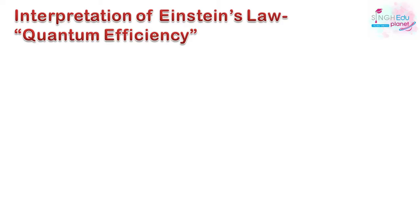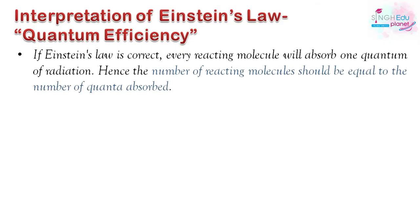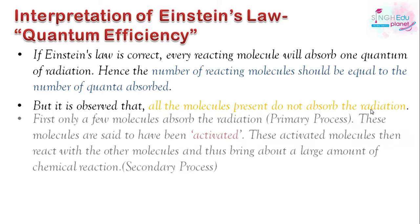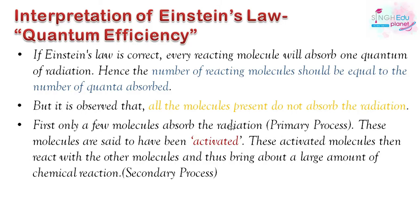Now we need to learn the interpretation of Einstein's law and define quantum efficiency and quantum yield. According to one quantum of radiation absorbed, the number of reacting molecules should equal the number of quanta absorbed. However, not all molecules absorb radiation. Those molecules that do absorb radiation undergo what is called the primary process, and the molecules that have absorbed radiation are called activated molecules. These activated molecules then react with other molecules in the secondary process.